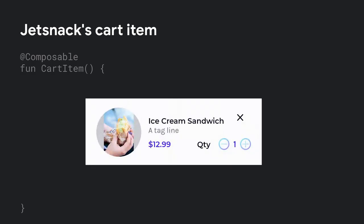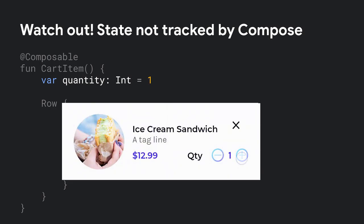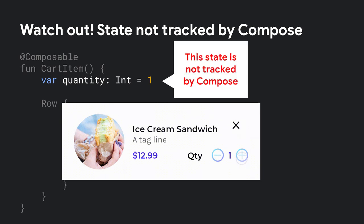Let's focus on an individual cart item — an element that shows an item in your shopping cart and lets you change the quantity. We can build the UI using a row with two buttons and a text, but how do we keep track of the current quantity? If we simply add a mutable variable to the composable function, we see that nothing happens. When tapping the increment and decrement buttons, the quantity doesn't change, because the quantity variable is not tracked by Compose.